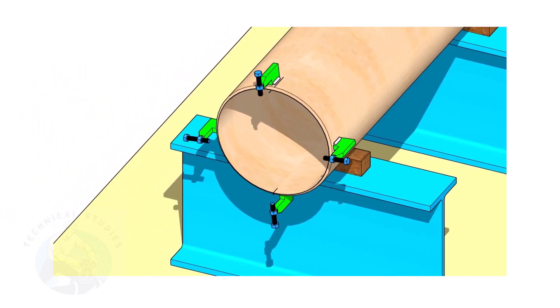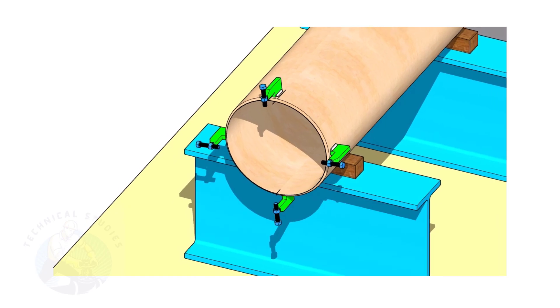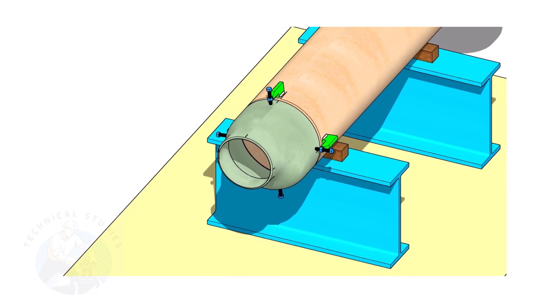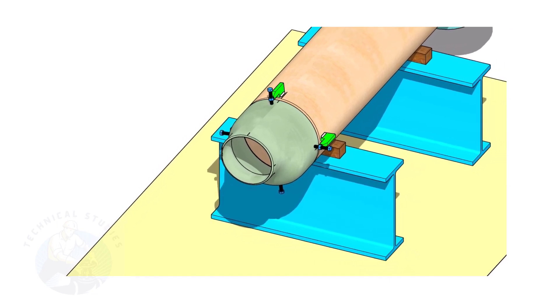If you don't have a pipe aligning clamp, tack weld four jack bolts 90 degrees apart as shown. Put the reducer in the clamps. Slightly tighten the bolts.